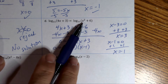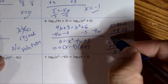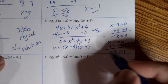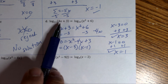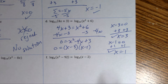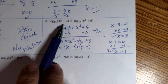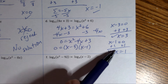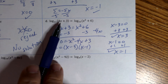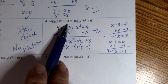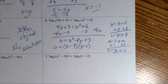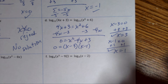Checking x = 3: 4(3) + 3 = 15, and 3² + 6 = 15 — that works. Checking x = 1: 4(1) + 3 = 7, and 1² + 6 = 7 — that works too. The key is ensuring the argument is positive, not just that both sides are equal. Both 15 and 7 are positive, so both solutions are valid.